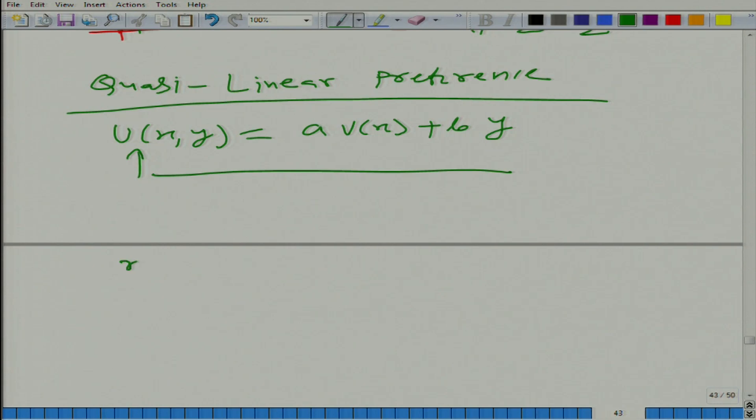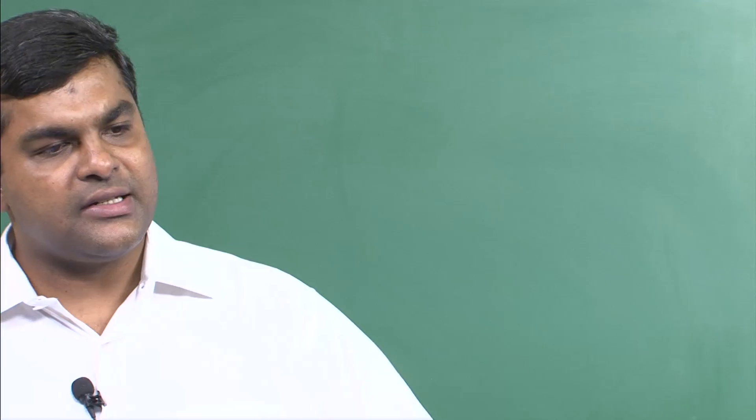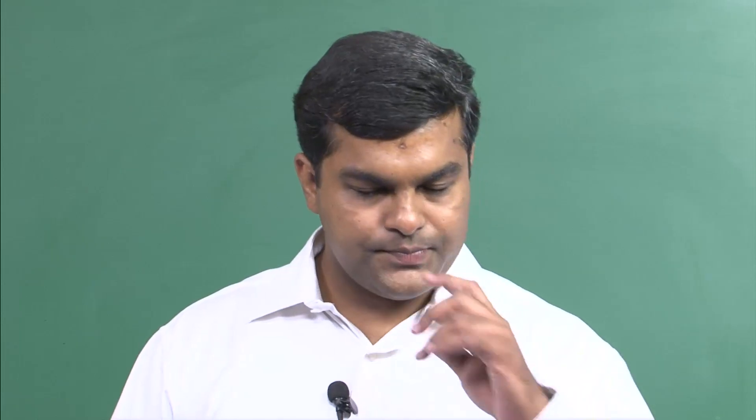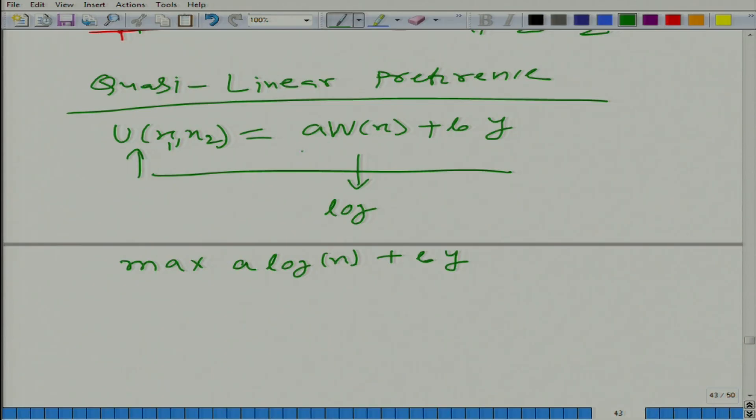So now, let us take a problem where we maximize, let us instead of v(x), just for simplicity, let us take log. a*log(x) plus b*y, or if we are using x1, v is a function - it is not same v as the earlier one, if it is confusing you, take it as w - that it is a function of x. What I mean to say: an individual is said to be having quasi-linear preference if the utility function representing his preferences can be written in this particular form.